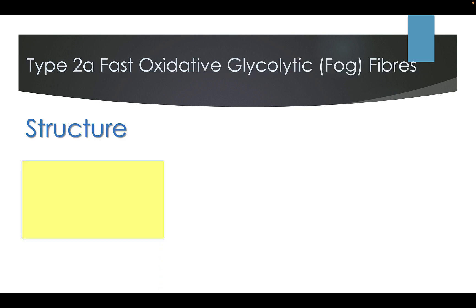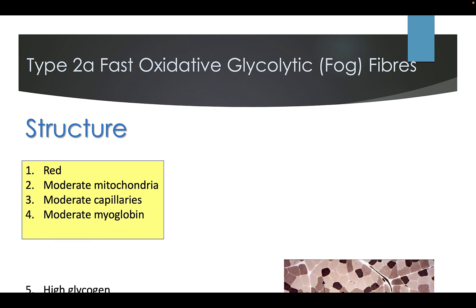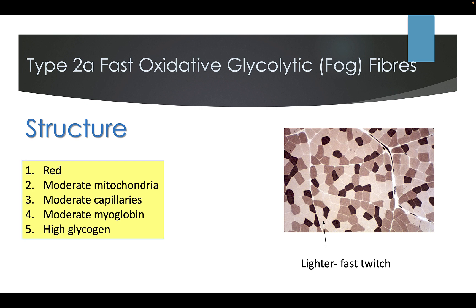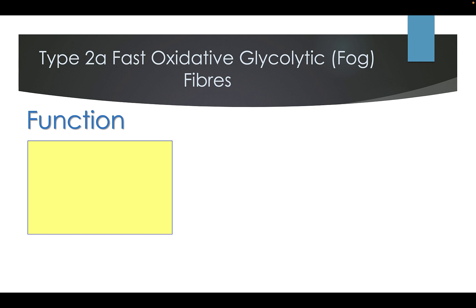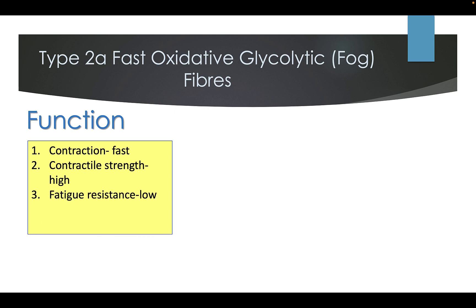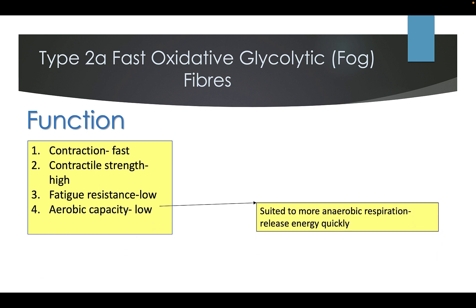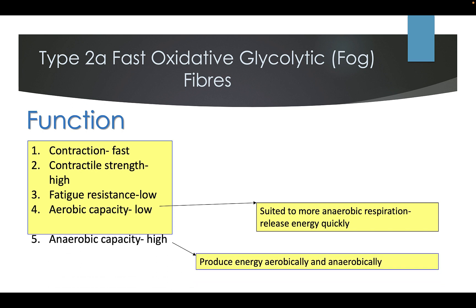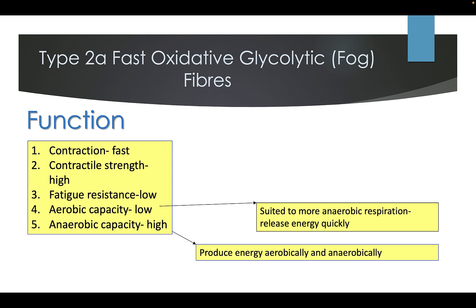The structure of Type 2A fast oxidative glycolytic fibres, sometimes known as FOGs: they are red, with moderate mitochondria, moderate capillaries, moderate myoglobin, and high glycogen. Their functions: they contract fast with high contractile speed and high contractile strength. Their fatigue resistance is quite low, and their aerobic capacity is also quite low, suited to more anaerobic respiration to release energy quickly. Their anaerobic capacity is high, producing energy both aerobically and anaerobically.